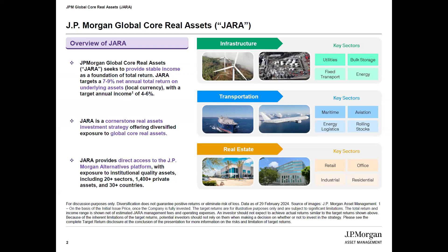We get that foundational quality in two key ways. Firstly, through our diversification. We are not a targeted or niche real asset strategy focused on one particular sector. We are broadly diversified across the key three pillars of real assets: infrastructure with sectors like utilities, energy, fixed transport like airports and seaports, transportation including floating and flying assets and increasingly trains, and then real estate including the traditional core four sectors.